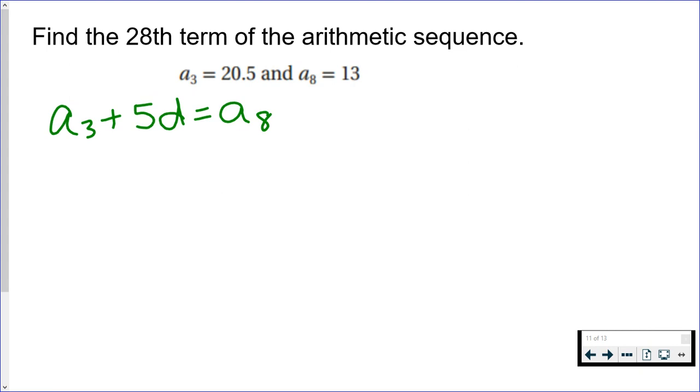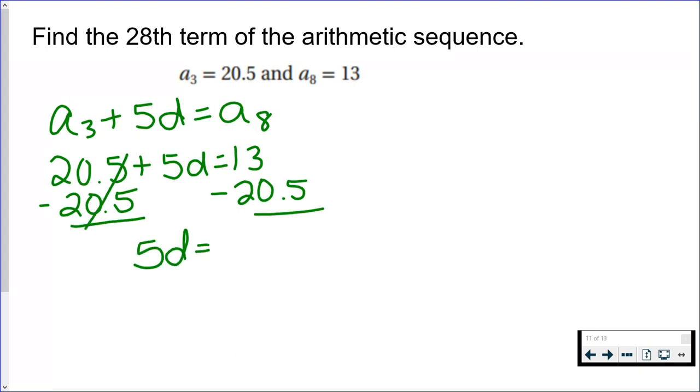So we're going to start by adding the common difference five times in order to get from 20.5 to 13. Well, I know the third and the eighth term, so I can replace those. And now all I have left to do is solve for d. If you subtract 20.5, you get negative 7.5, and then I will divide by five. So the first thing we found is that our common difference is negative 1.5.